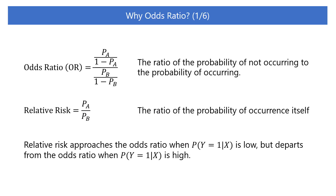As we can see, the odds ratio is a little complicated. Some of you may think that it is simpler to divide the percentage of positives in group A by the percentage of positives in group B. The ratio of the risk of an event in one group versus the risk of an event in the other group is called relative risk or risk ratio.